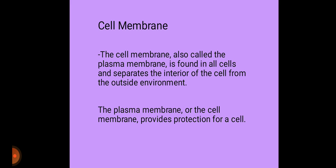Cell membrane is a double layer of lipids and proteins that surrounds a cell. It separates the cytoplasm. The cell membrane regulates the transport of material entering and exiting the cell. The plasma membrane or the cell membrane functions to provide protection for a cell.